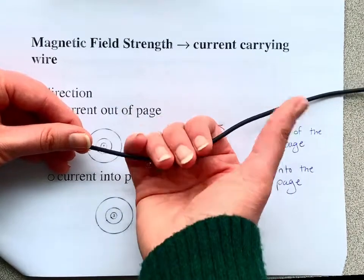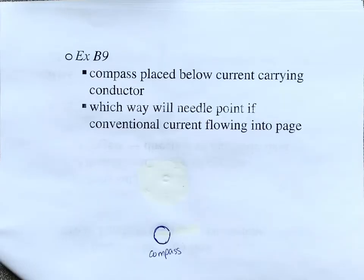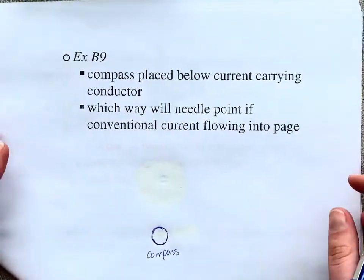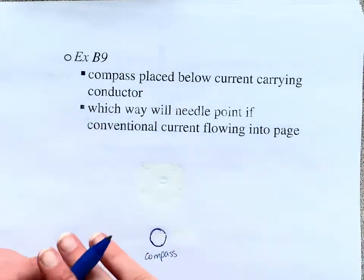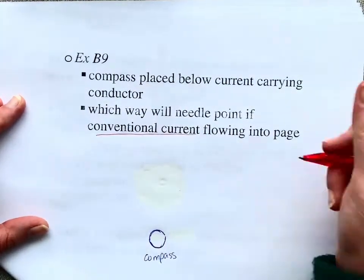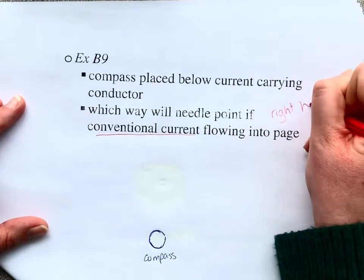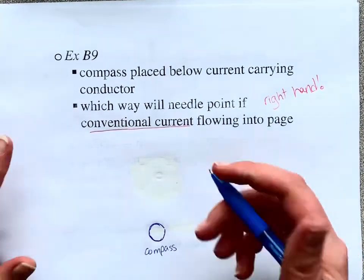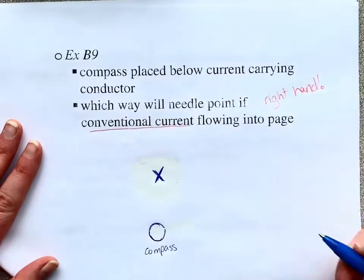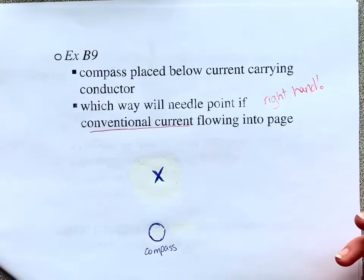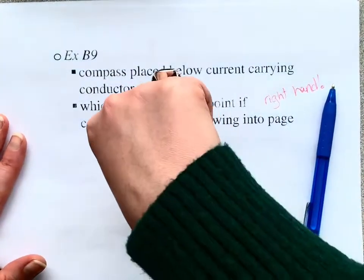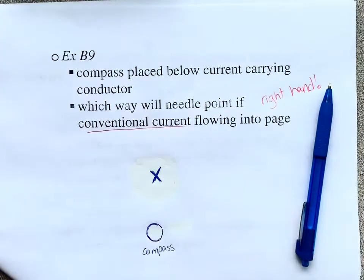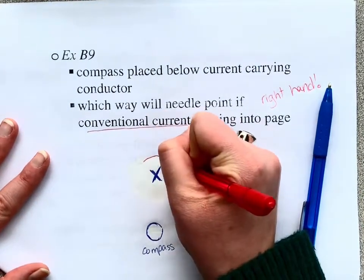Let's do an example. We have a compass placed below a current-carrying conductor, and we want to know which way the needle is going to point. Conventional current means we use the right hand. The conventional current is flowing into the page — that's a big X — so therefore our magnetic field is curling clockwise around the wire.